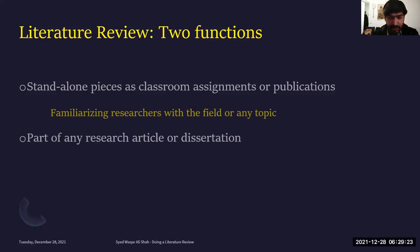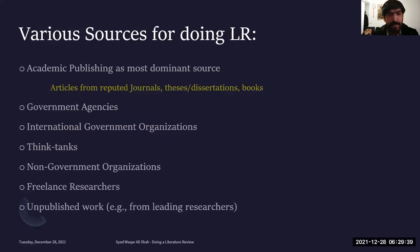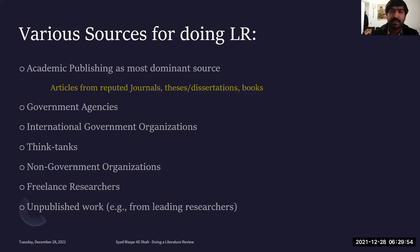These are two important functions to consider. Whenever we are doing a literature review, we need to be clear whether it is going to be part of my article or thesis, or whether it is going to be a standalone piece. Considering that purpose, you have to structure it. Now, where can we get our literature from? A common assumption is that literature review is done from research articles. Yes, research articles are one source, and academic publishing is a dominant source for literature review.